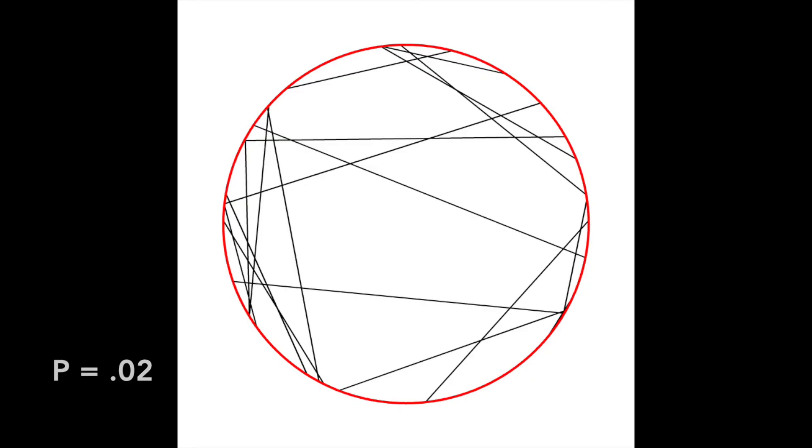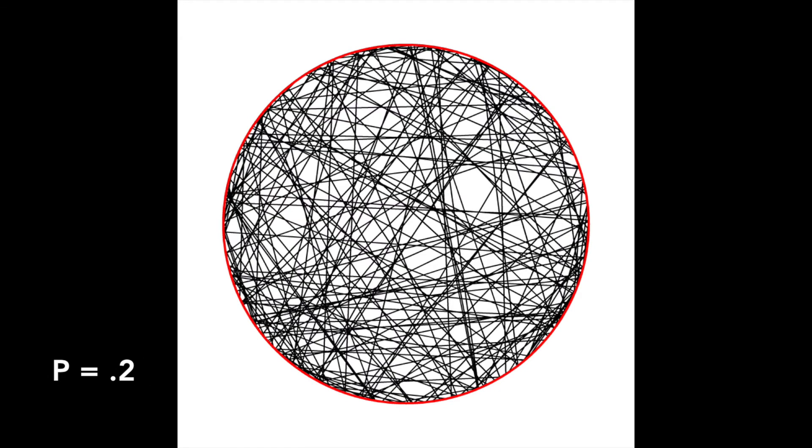After looking at networks with a small number of nodes, I looked at networks with larger numbers of nodes. This network shows 1,000 nodes, each connected to its two nearest neighbors. The probability that random edges are drawn is 0.02. This network is similar, but the probability that random edges are drawn is 0.2.